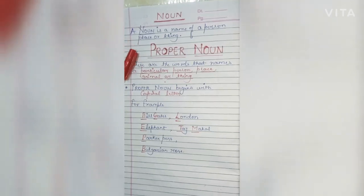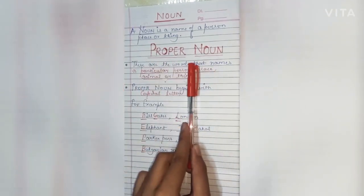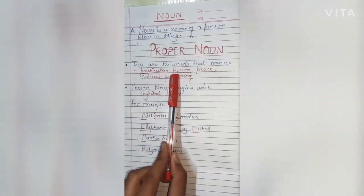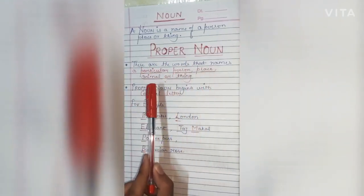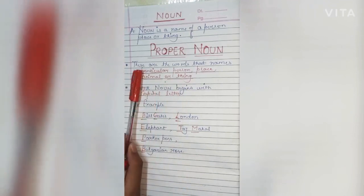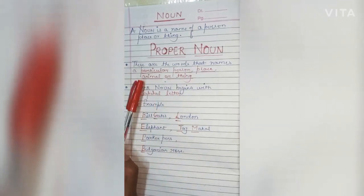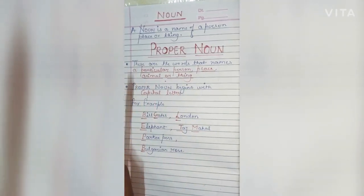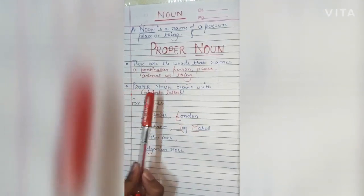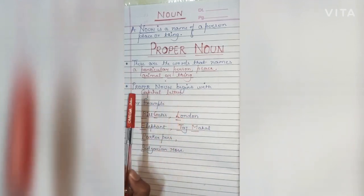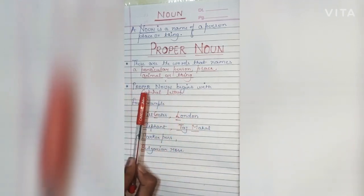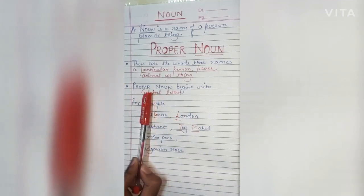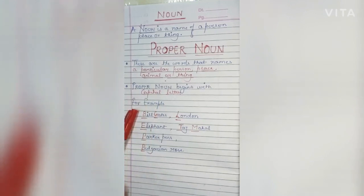Now let us talk about the proper noun. The definition is: these are the words that name a particular person, place, animal, or thing. Any specific or particular person, place, thing, or animal's name is called a proper noun. One more important point — a proper noun always begins with a capital letter. We always write proper nouns with a capital letter.